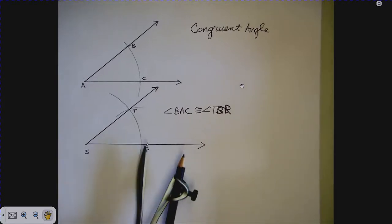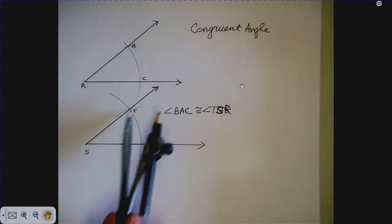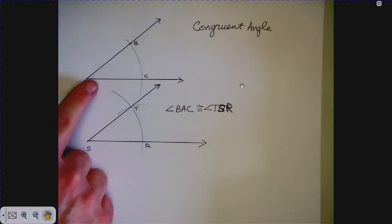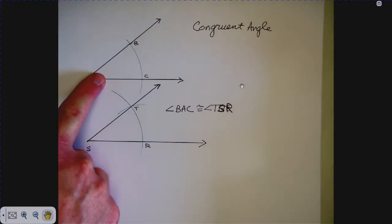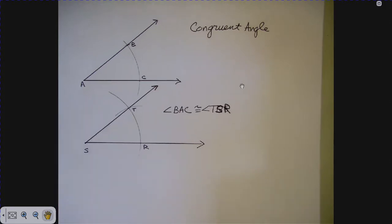So we know angle BAC is congruent to angle TSR, meaning if measured in degrees with a protractor they will be the same. You can go ahead and check that with a protractor. The next construction we're going to do is called a perpendicular bisector.